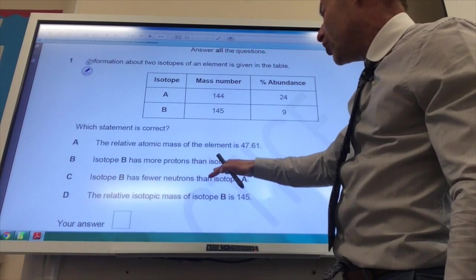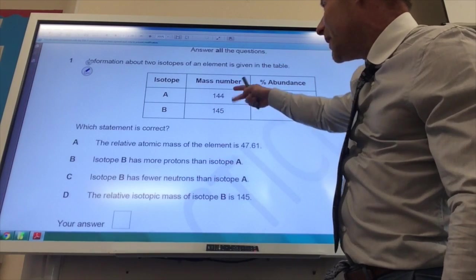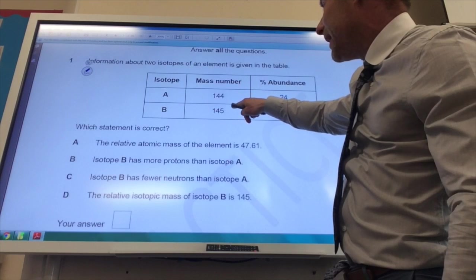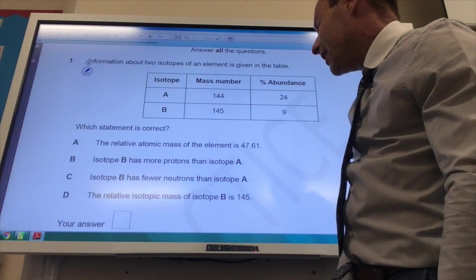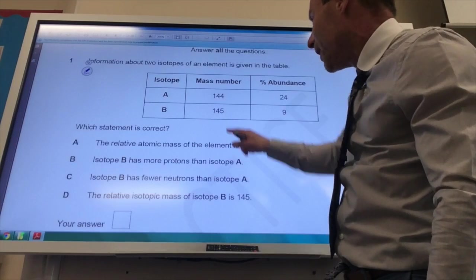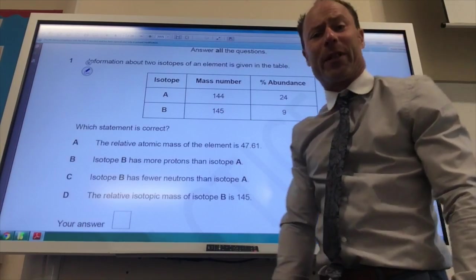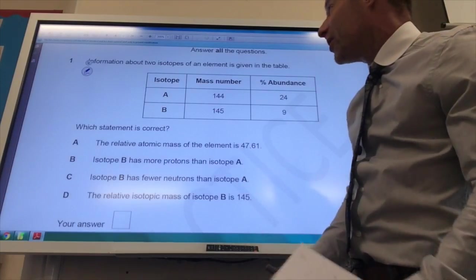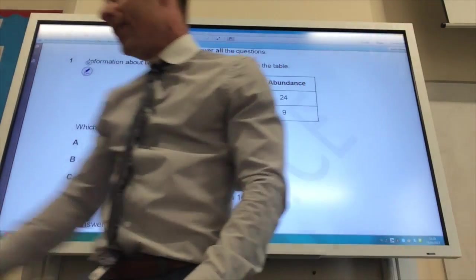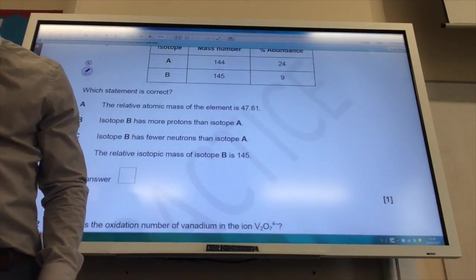Isotope B has fewer neutrons than isotope A. No, it's the opposite. The mass number of B is higher, so B's got more neutrons. The relative isotopic mass of isotope B is 145. That is correct because it's the same as the mass number for relative isotopic mass. So the answer to 1 is D.